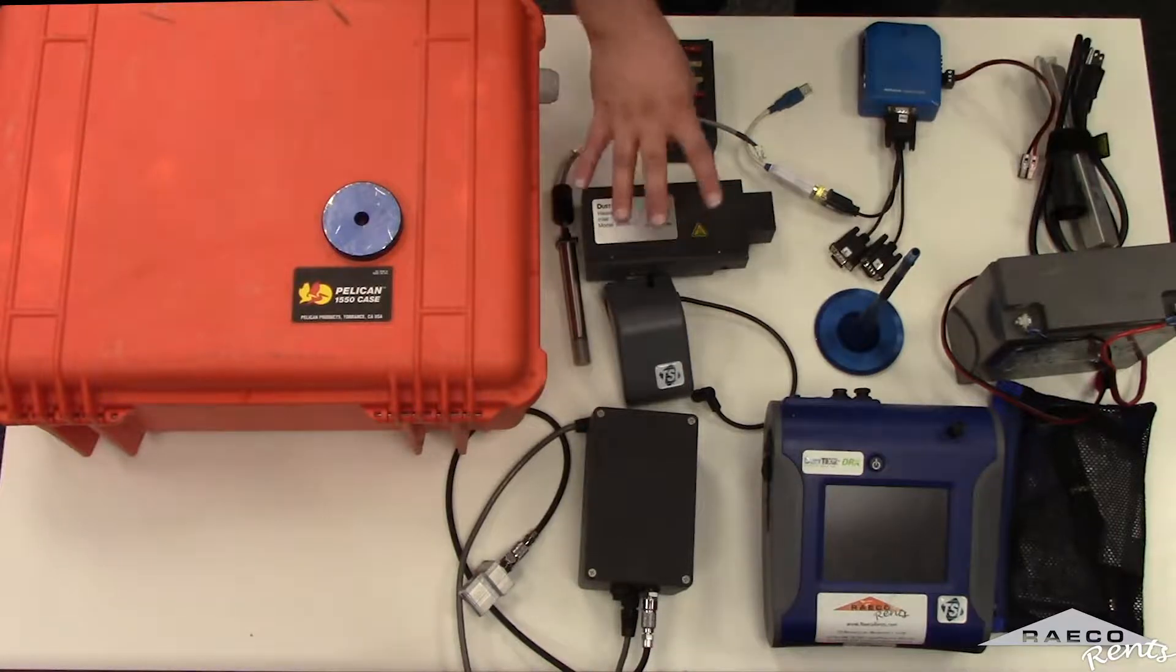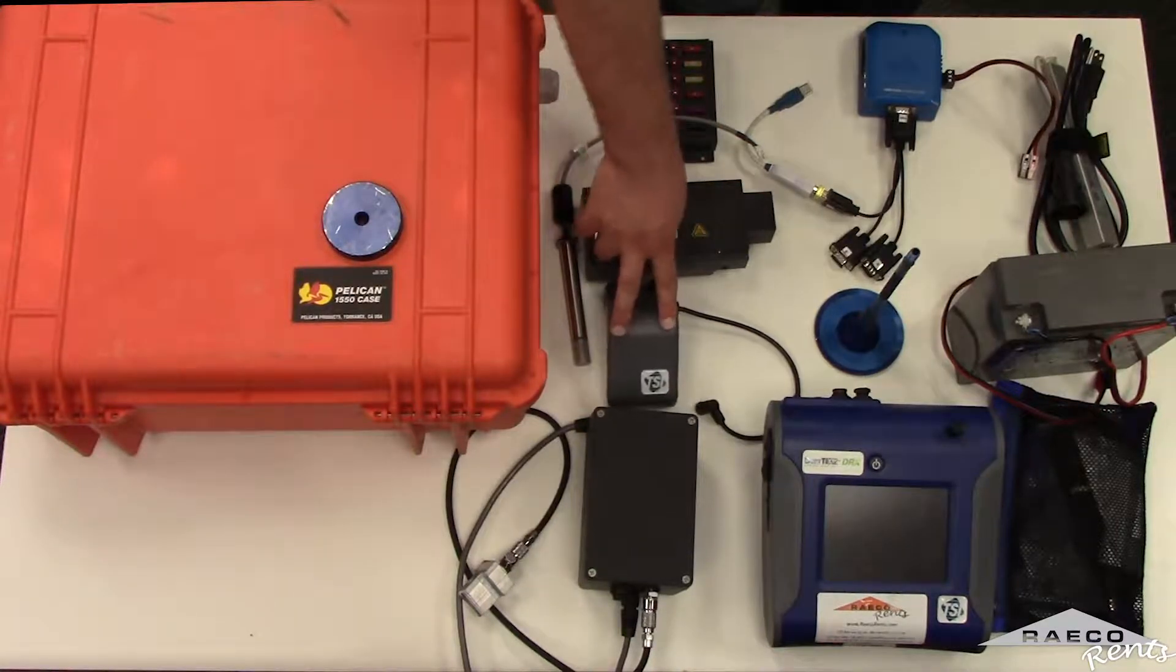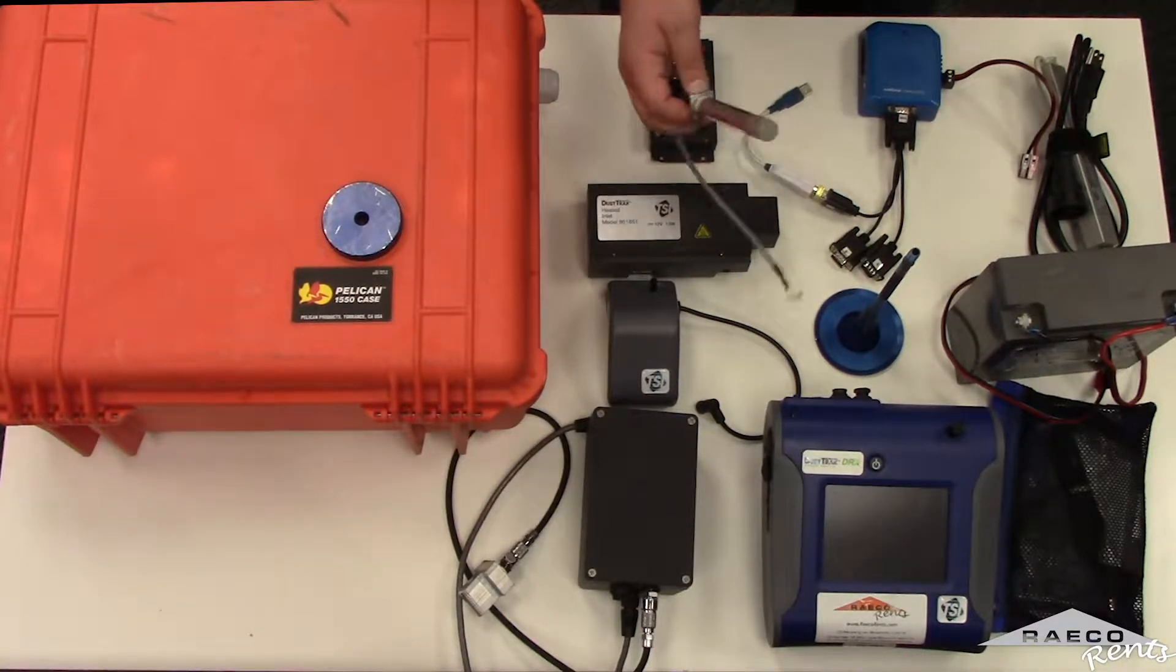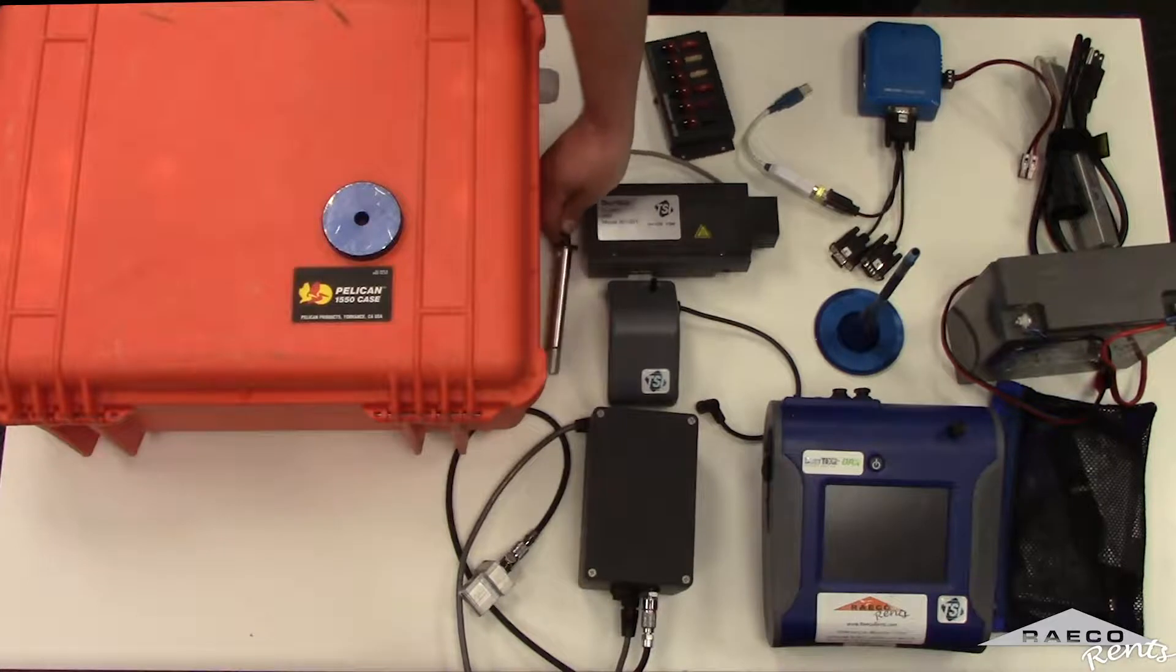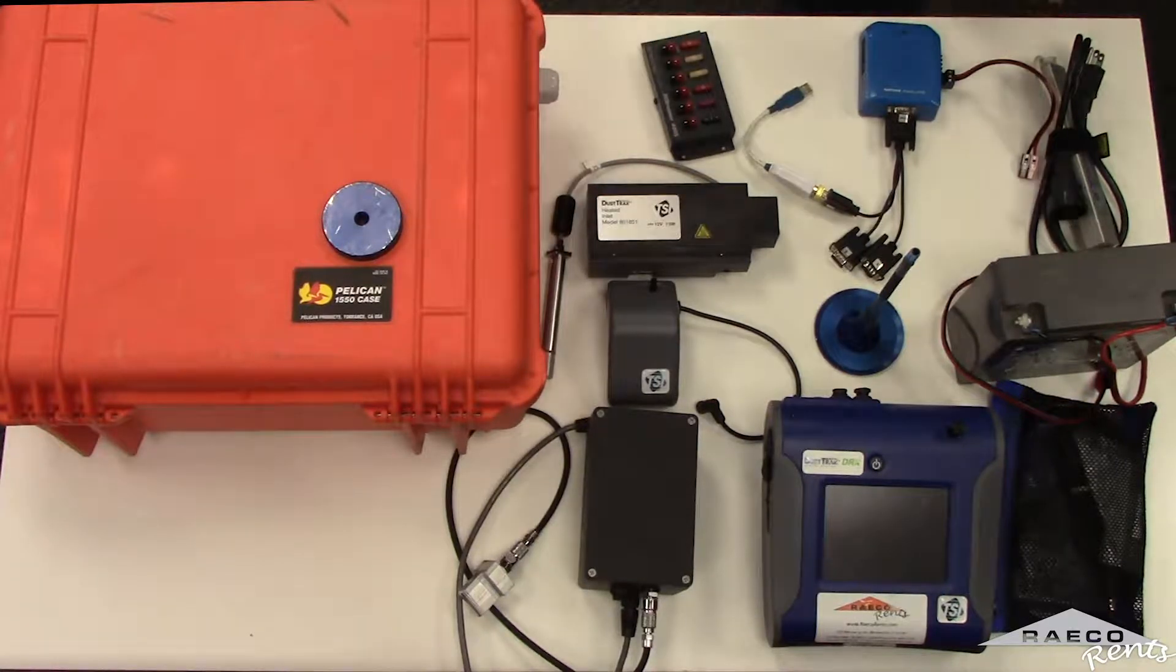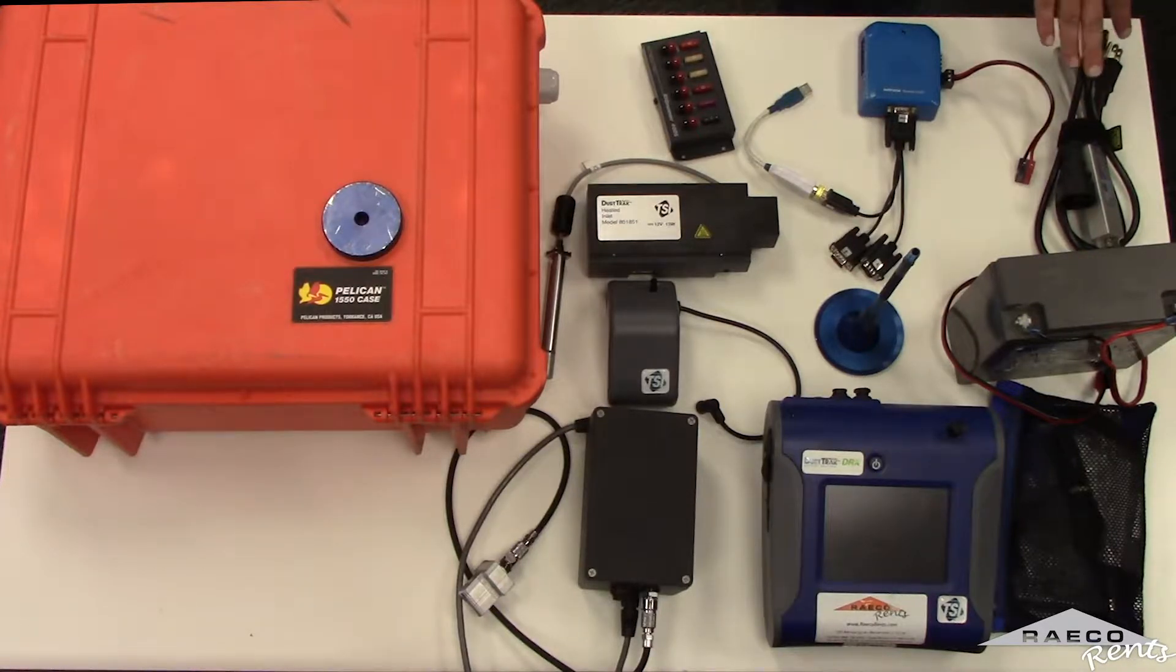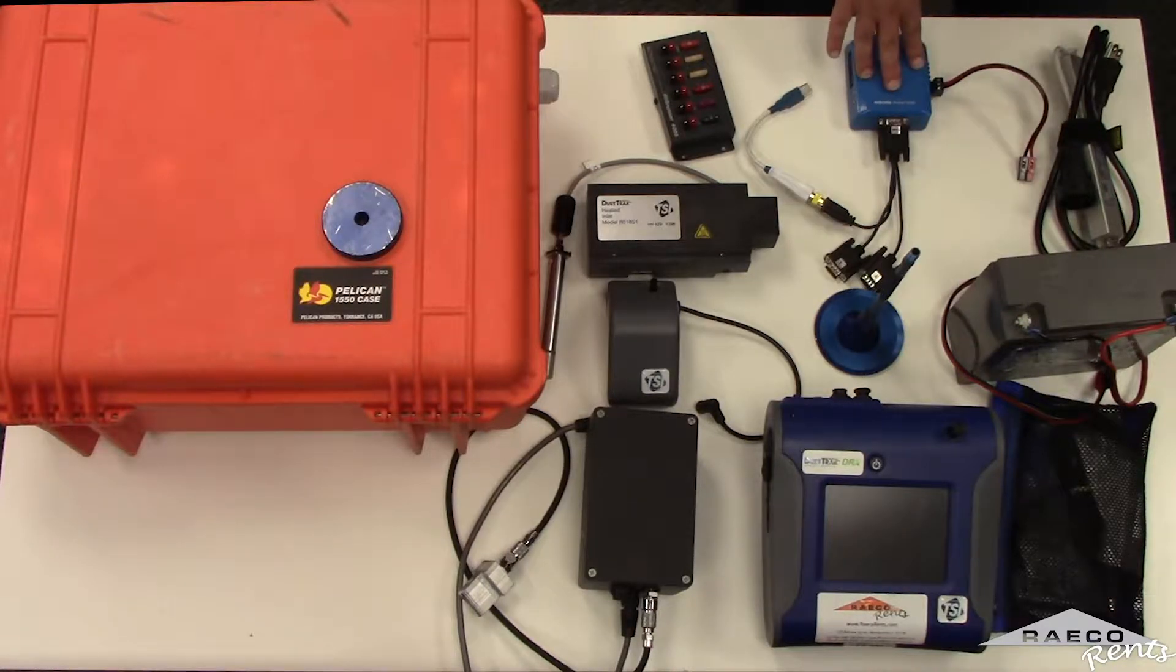Now onto the optionals. The first optional accessory is the auto zero inlet. Second is the heated inlet module which comes stock with a temperature humidity probe. You may also want a waterproof power cable. This is for when the dust track is plugged in to a main power line. And finally we also might include the Themis for remote data logging.